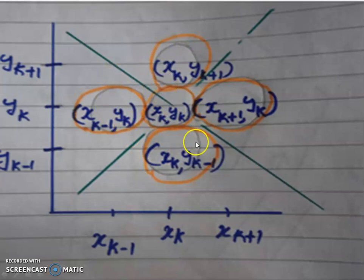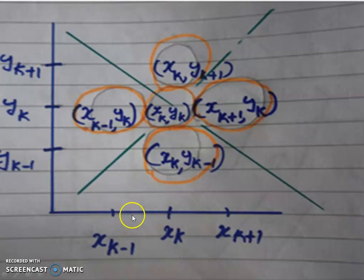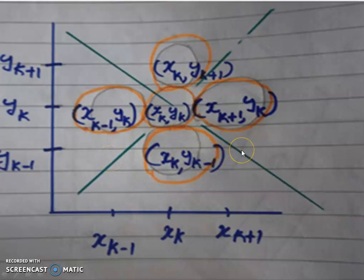In the 8-connected method, you also consider the diagonal pixels. That gives 4 additional pixels — 8 total neighbors, making 9 pixels including the current one. The diagonal coordinates are: (XK−1, YK+1), (XK+1, YK+1), (XK−1, YK−1), and (XK+1, YK−1).